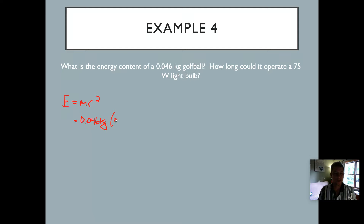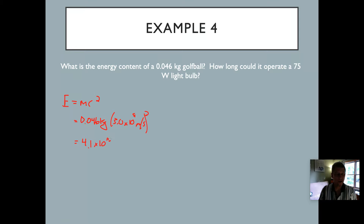That's going to be 0.046 kilograms times 3.0×10⁸ meters per second, quantity squared. If you square that you get 9×10¹⁶, multiplied by 0.046 kilograms, which gives you 4.1×10¹⁵ joules. So 4.1×10¹⁵ joules out of a motionless golf ball. If we could convert all the mass of a golf ball into energy, we'd get 4.1×10¹⁵ joules.